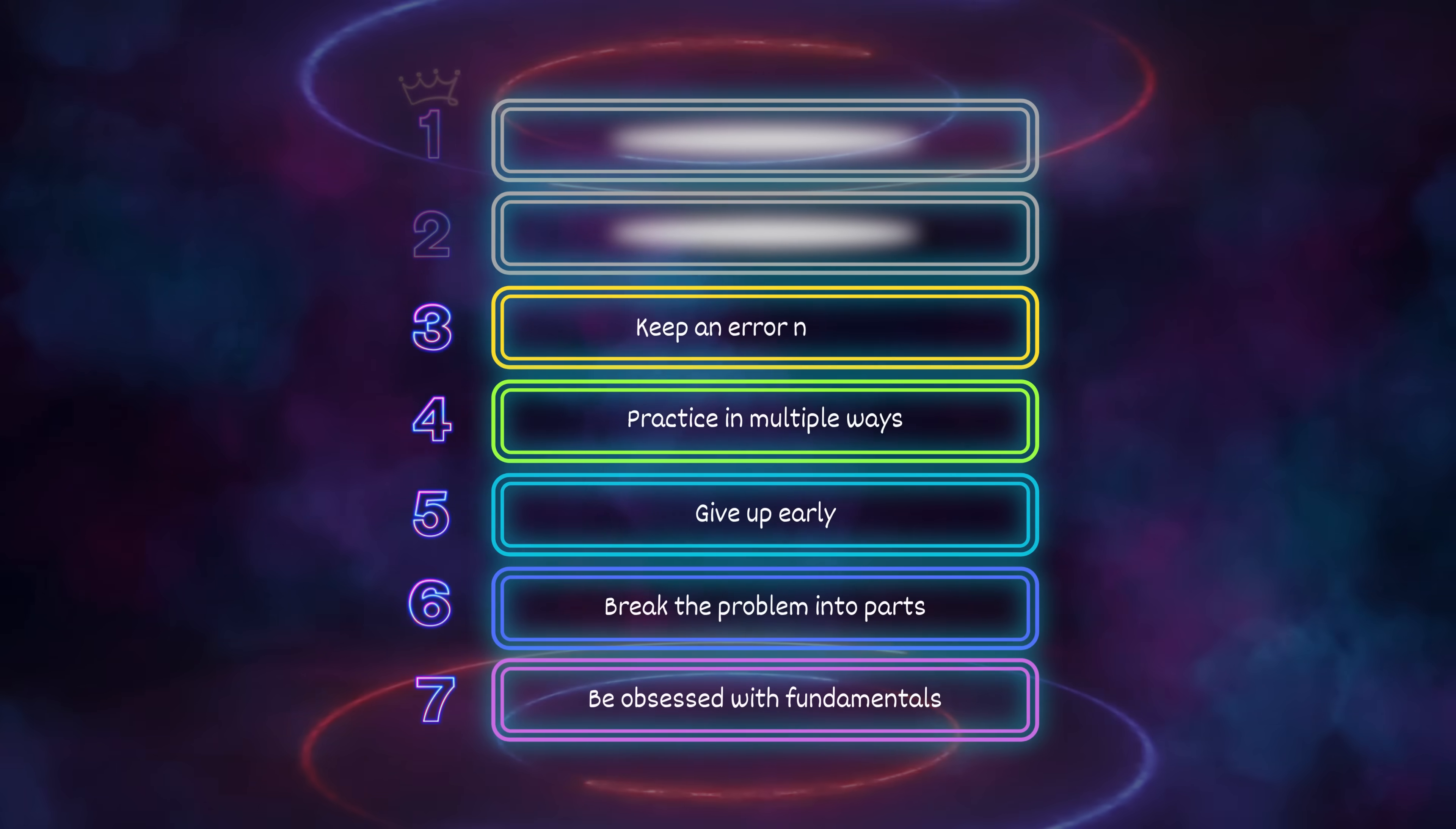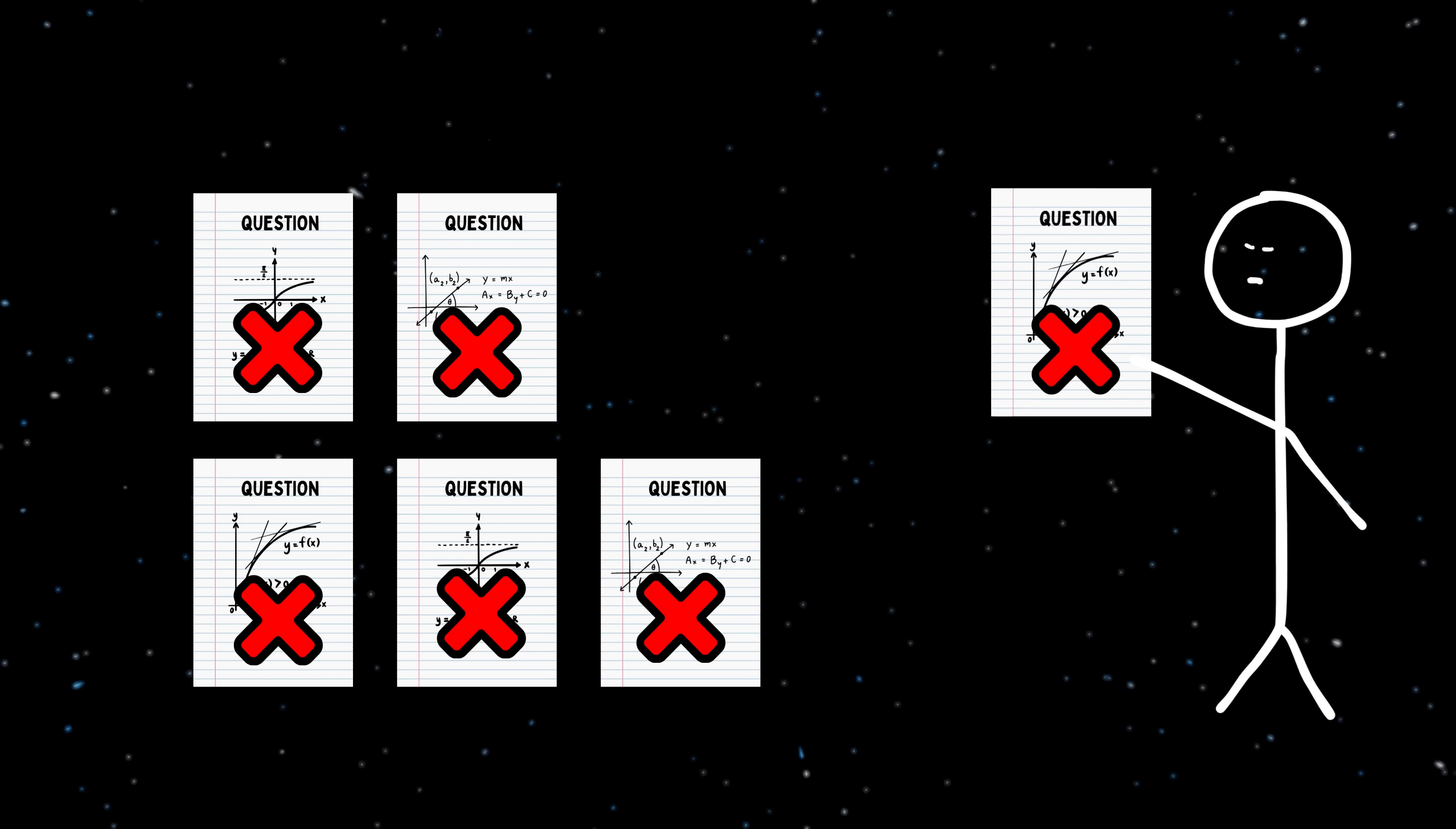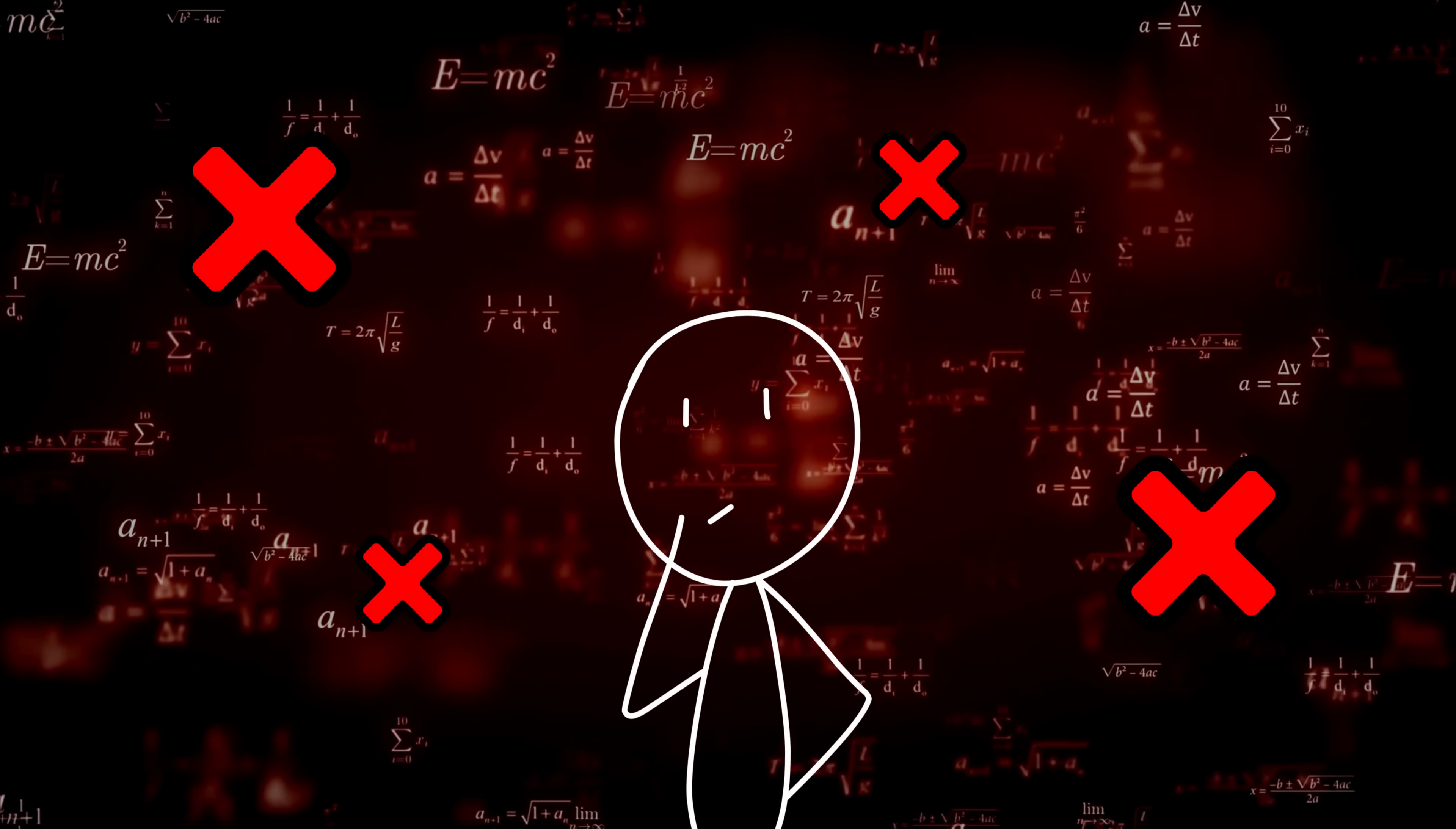Number 3: Keep an error notebook. Oh no, you made a mistake. Poor baby. Did it hurt your fragile little ego? Meanwhile, Asian students are over here cataloging their screw-ups like Pokemon cards. Yeah, they've got a whole damn notebook with one side for solving and the other for documenting every dumbass move they made. Why? Because they actually want to learn from their failures instead of crying.